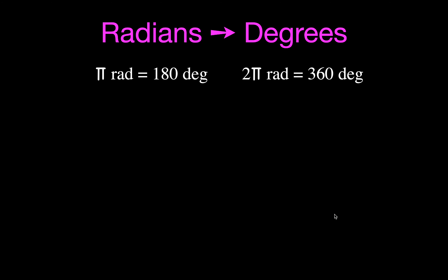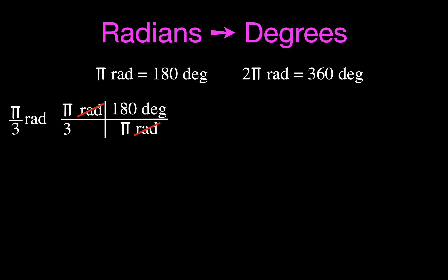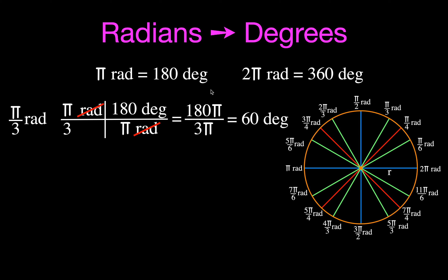Now converting the other way — radians to degrees — we use the same conversion. For pi over three radians: remember that pi over three means the 3 goes in the denominator and pi is separate. Put pi radians on the bottom and 180 degrees on the top to cancel radians. Multiply across: the pi's cancel, and 180 divided by 3 equals 60 degrees. That matches pi over three on the unit circle.